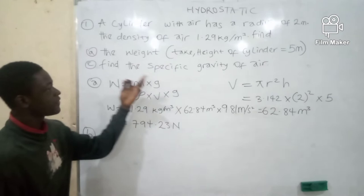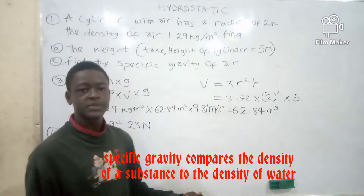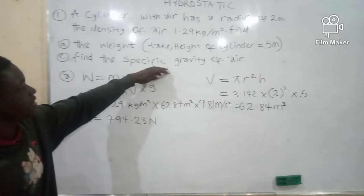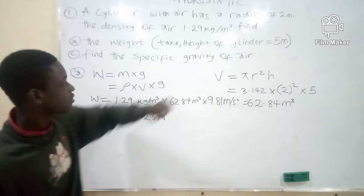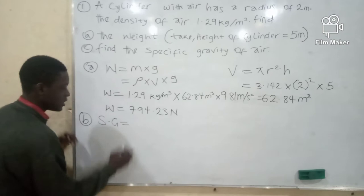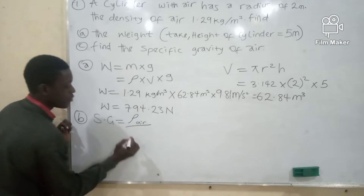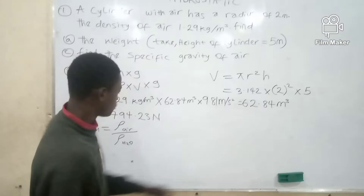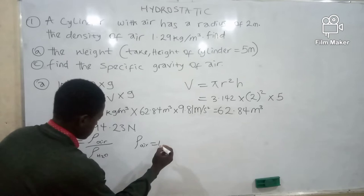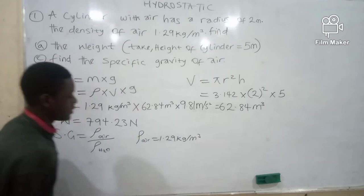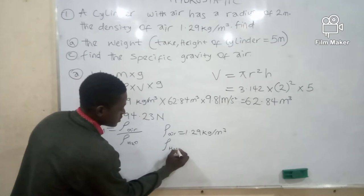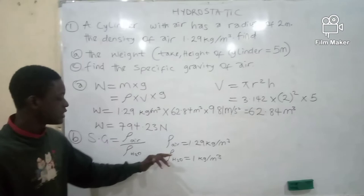For specific gravity, if we are to find the specific gravity of air, specific gravity compares the density of a substance with the density of water. Specific gravity is equal to the density of air divided by the density of water. We are given the density of air to be 1.29 kg per meter cubed, and the density of water is a constant value which is 1 kg per meter cubed. Now, we do direct substitution into this formula.